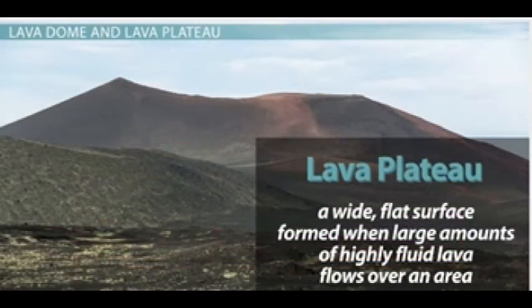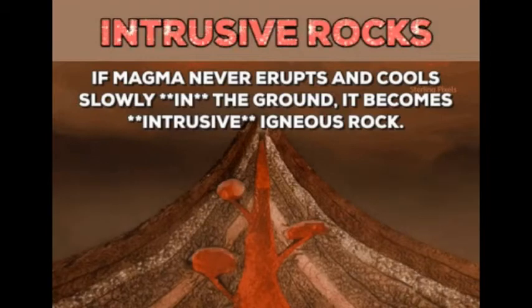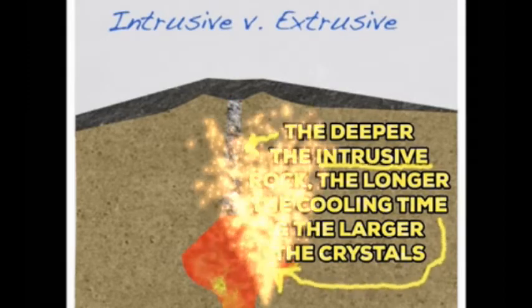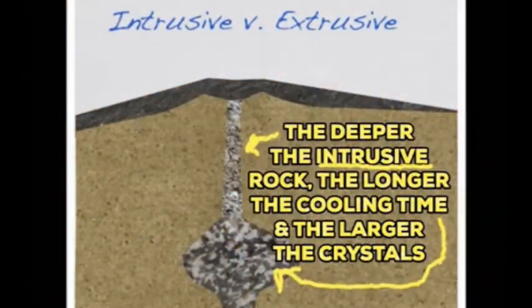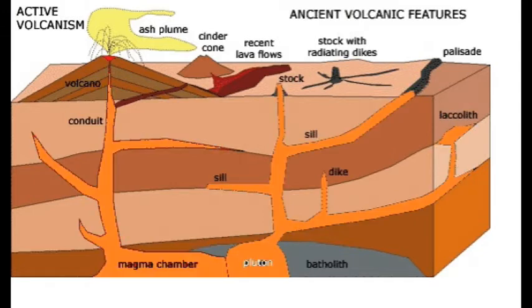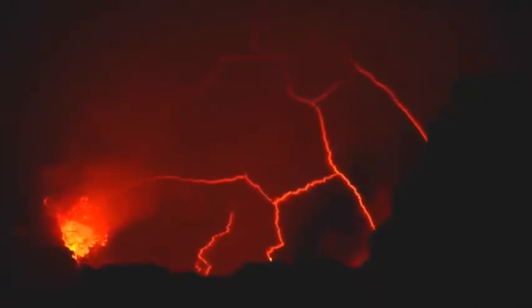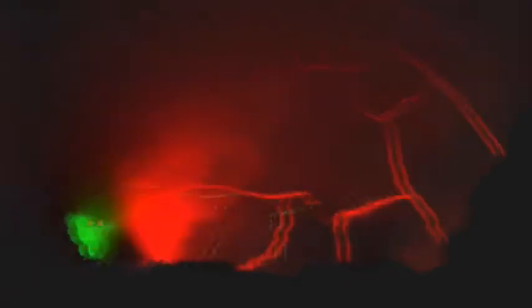There are also other extrusive features such as lava flows or even lava pavements. But inside the earth, that's where a lot of magic happens. When magma is pushing through lines of weakness or going between bedding planes inside the earth, it can get lodged, and eventually after many years it cools and produces the volcanic features we're going to look at right now.